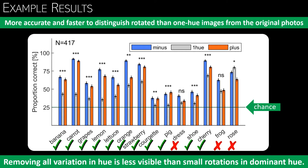Then we compared the performance for identifying the one hue images with the performance for identifying the rotated hue images. Here you can see the proportions of correct answers for each object and each condition. For most objects...